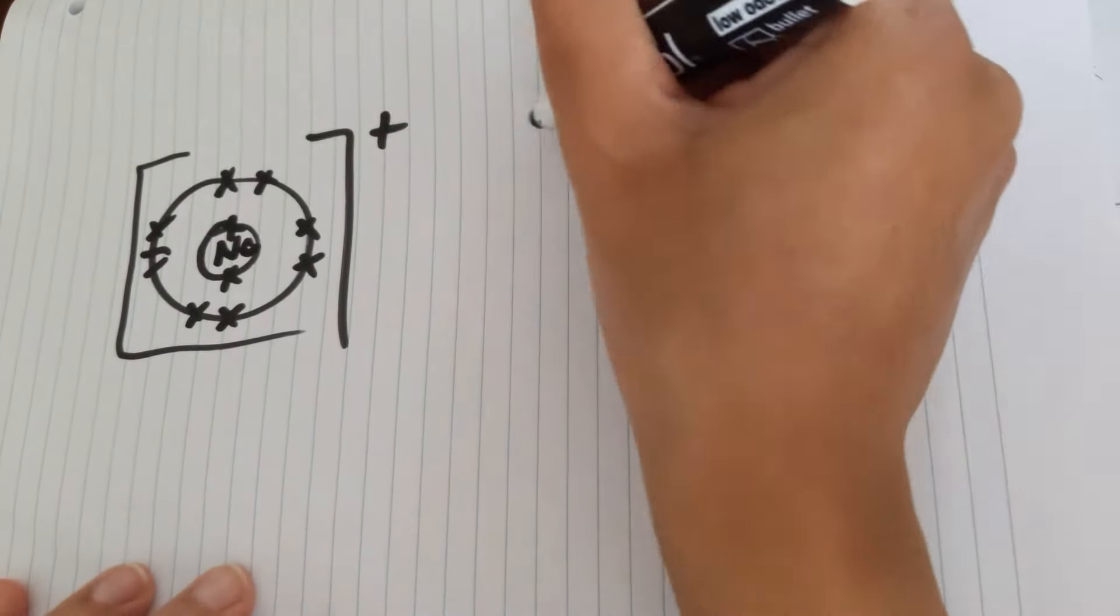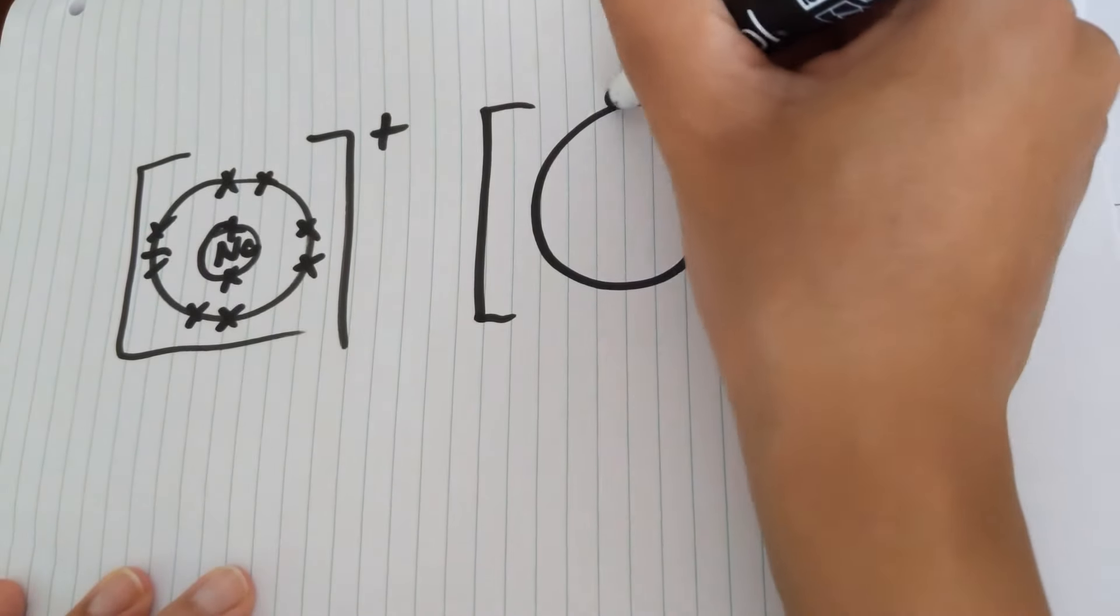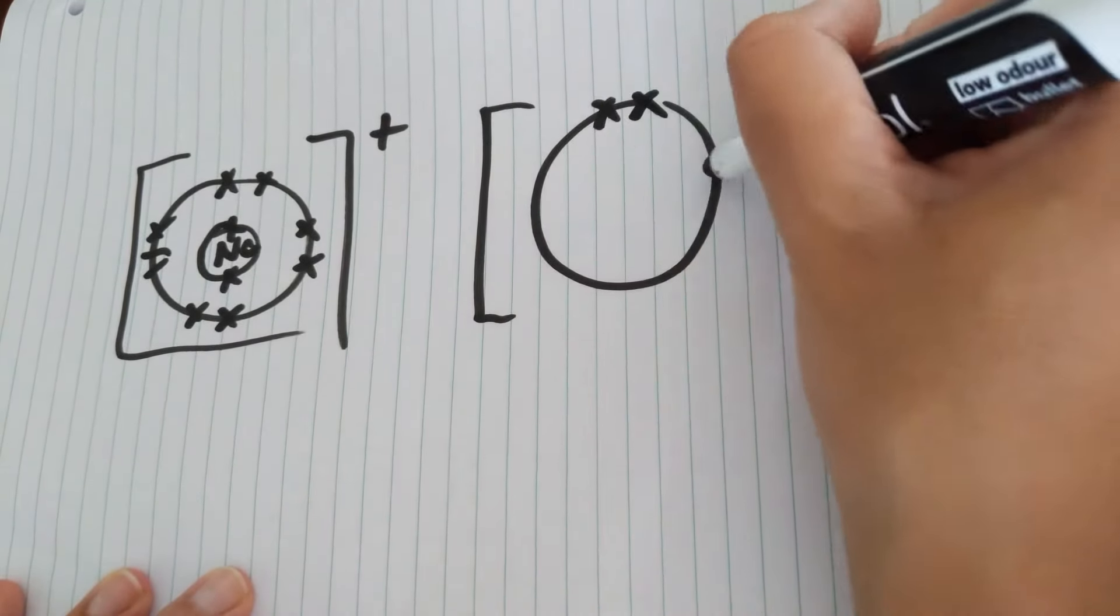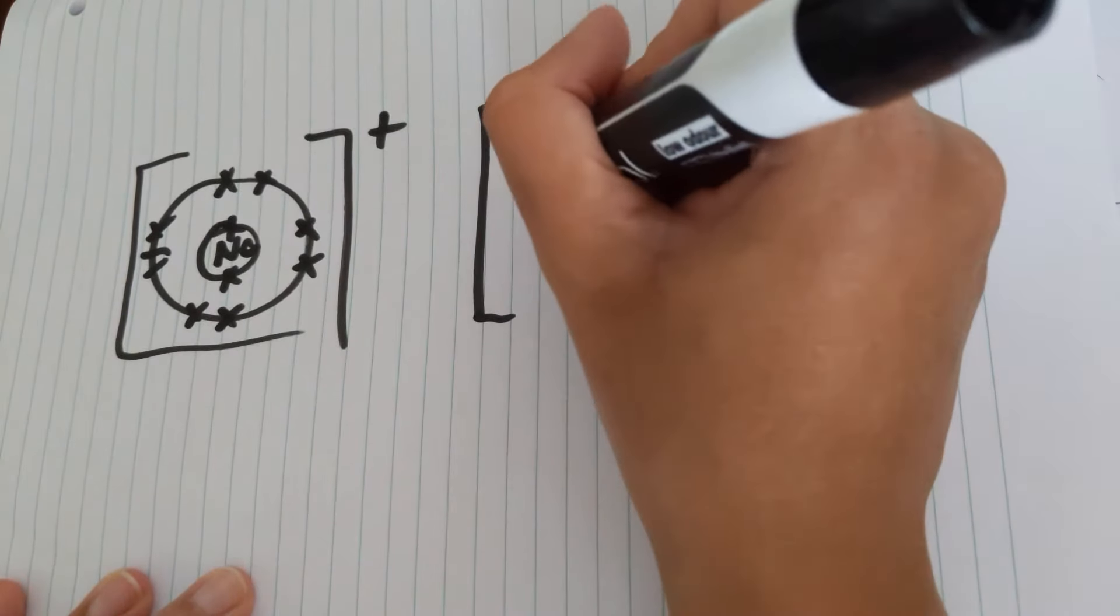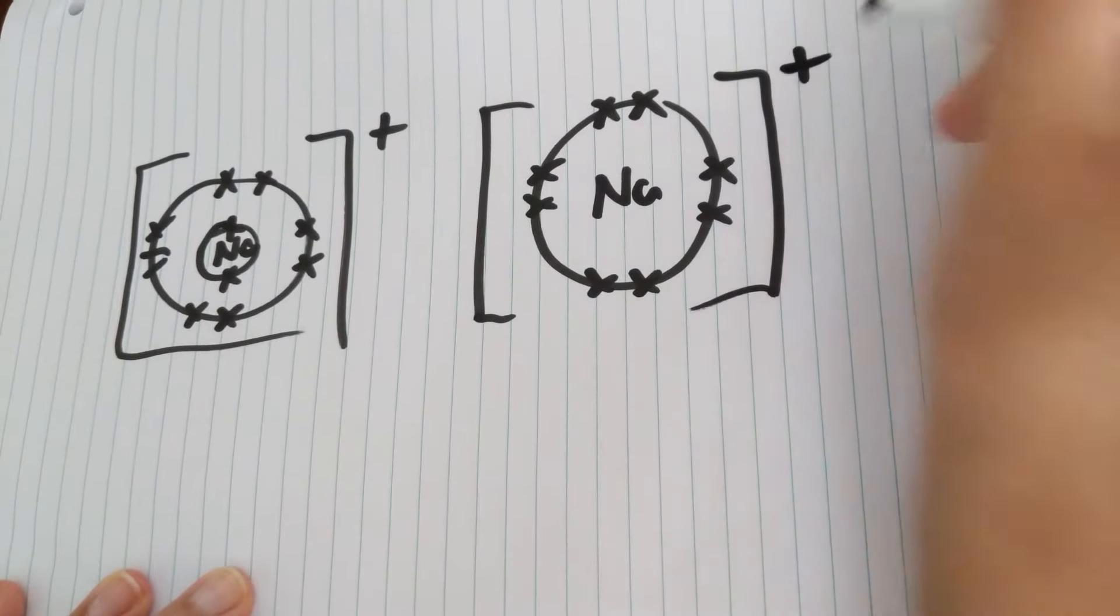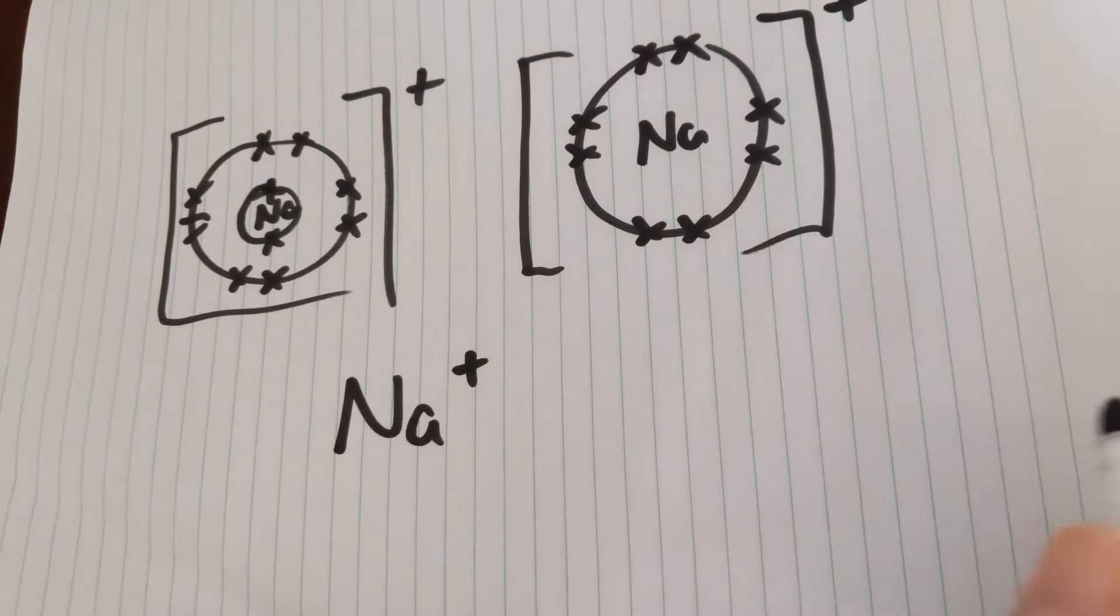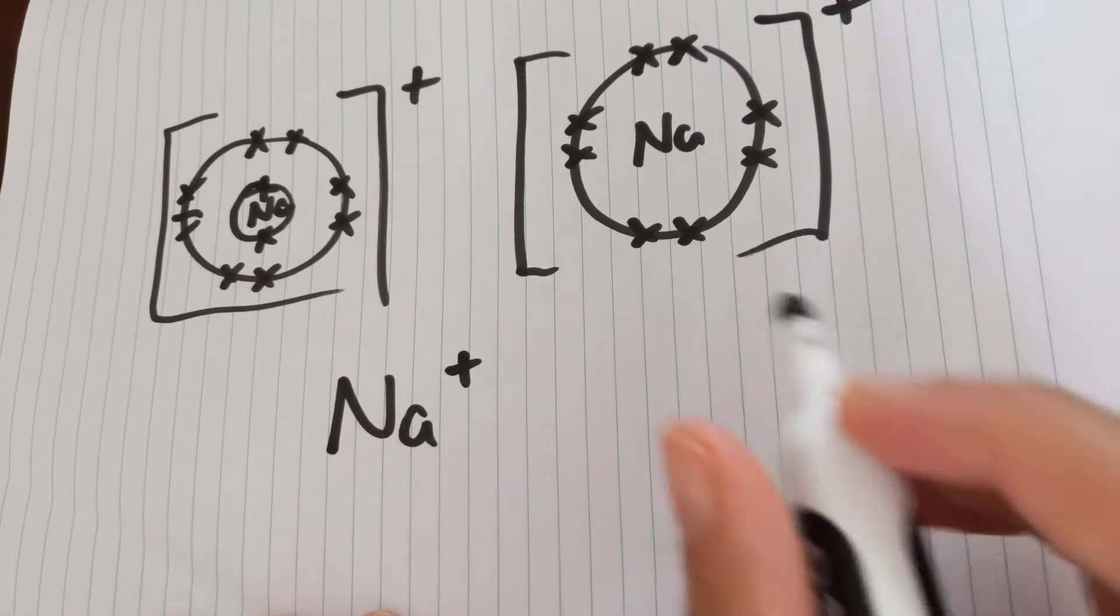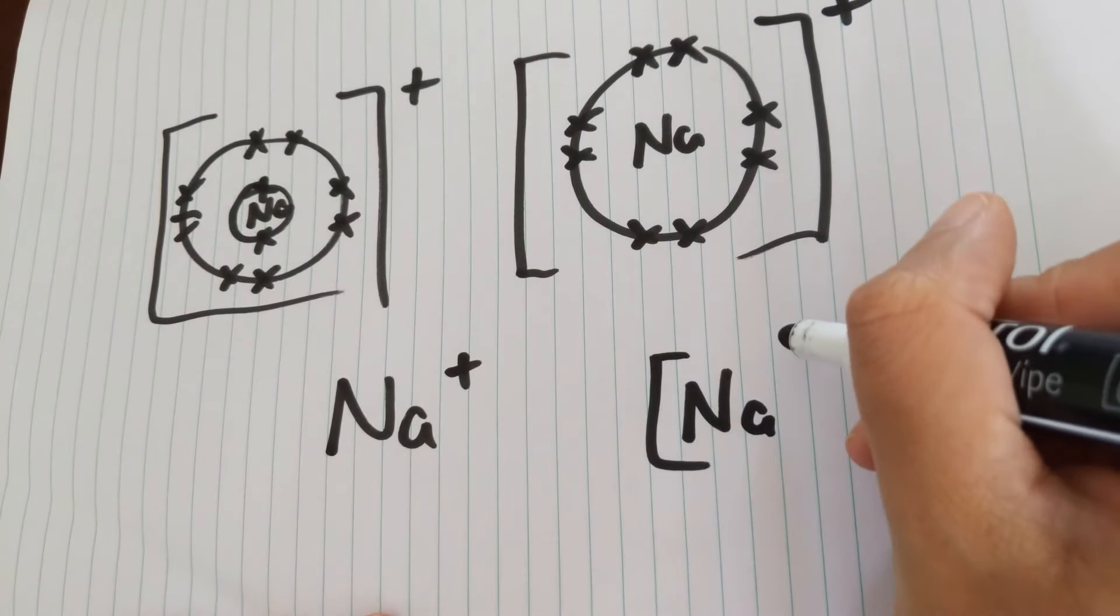You can also draw it just with the outermost shell. So you don't need to draw the inner shell and its eight electrons. You just need to label it like that. You could simply write Na plus. And you could also just write an Na like that.